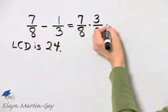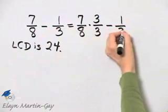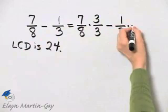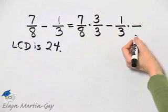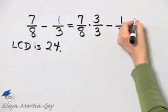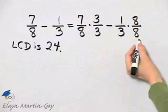Then let's continue. Minus, my second fraction is 1/3. What do I multiply 3 by in order to have a product of 24? Well, I multiply by 8. So I'm going to multiply the entire fraction by 8 over 8.